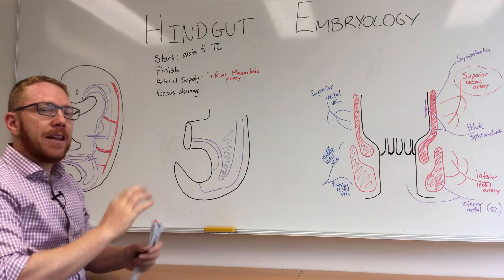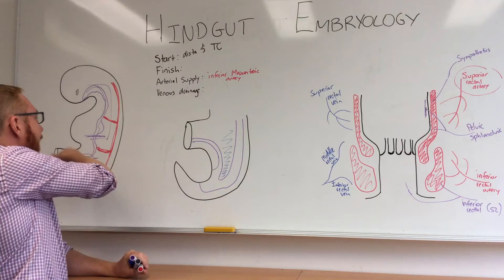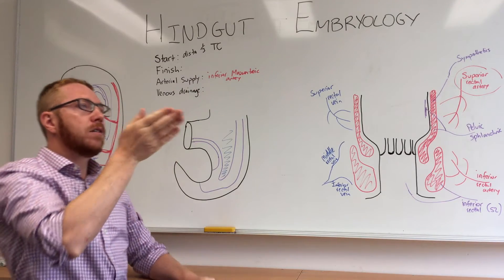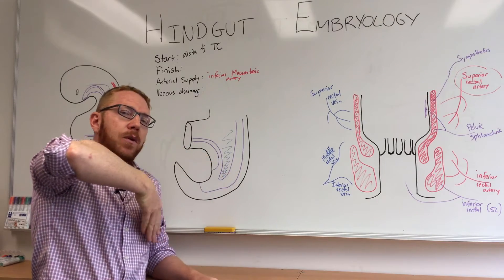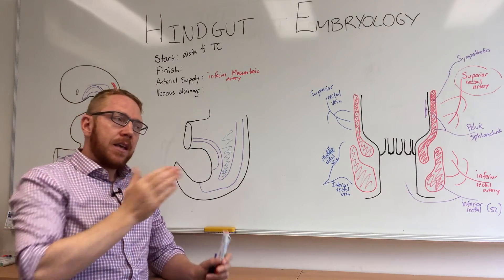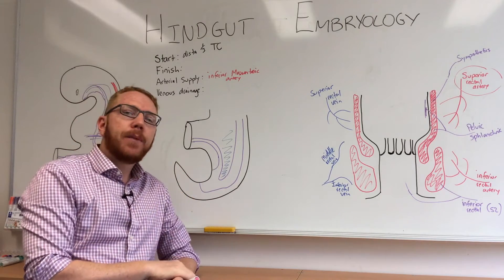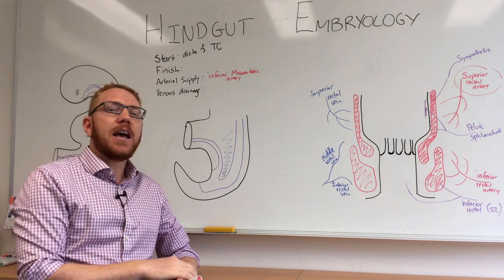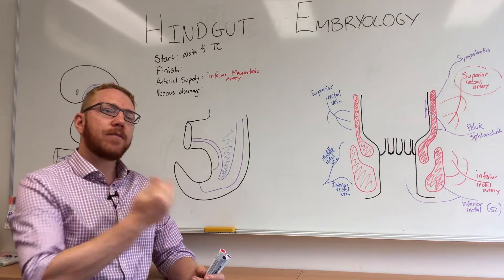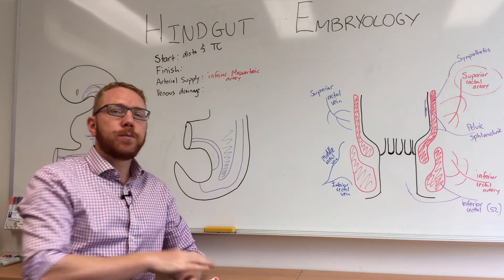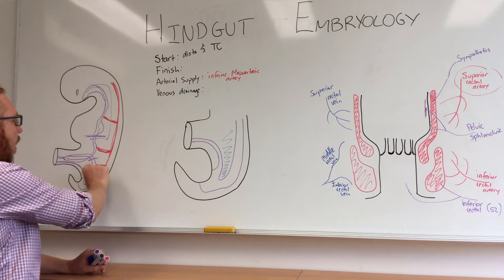One important point: after all the midgut rotation, the final descending colon flops back against the posterior wall. Where it rests against that wall, it becomes encompassed and covered with peritoneum, making it a secondary retroperitoneal organ. It becomes retroperitoneal due to that peritoneal covering, but it's not a true retroperitoneal organ like the kidney.